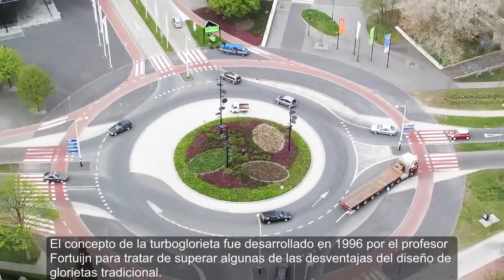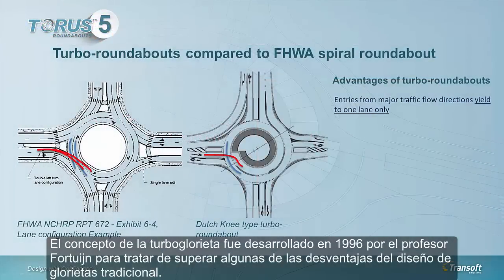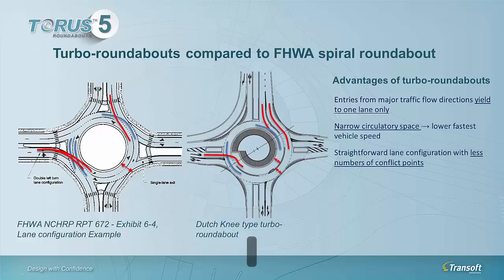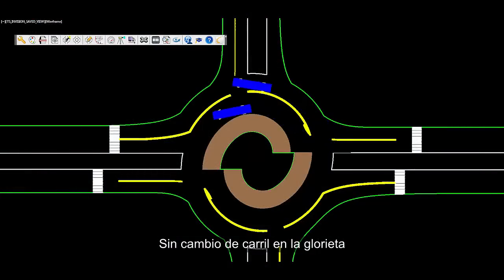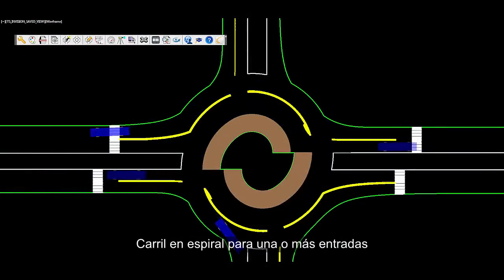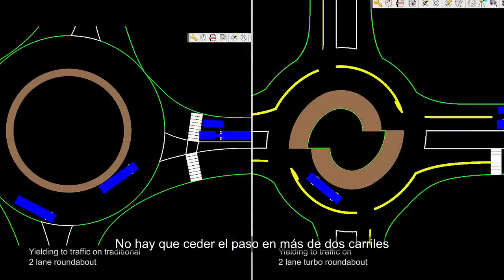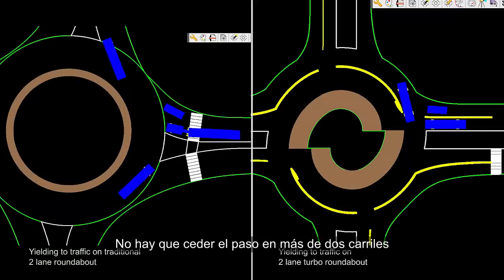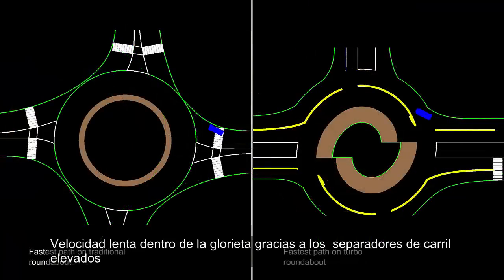The concept of the turbo roundabout was developed in 1996 by Professor Fratern in an attempt to deal with some of the drawbacks of the traditional roundabout design. The following are some key characteristics for turbo roundabouts: no lane changing on the roundabout, a nested spiral lane is introduced for one or more entries, no need to yield to traffic on more than two lanes, and low driving speed through the roundabout by the presence of raised lane dividers.